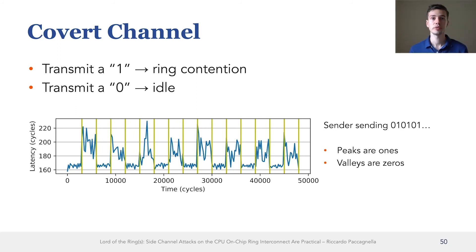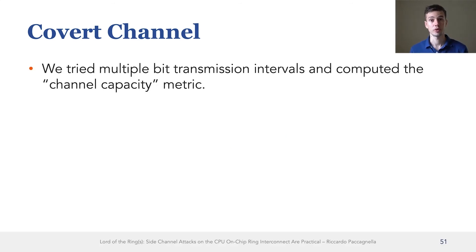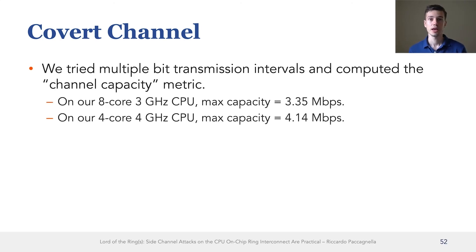To compare the performance of our covert channel with the one of prior work, we use the channel capacity metric, which takes into account both the bandwidth and the error rate. On both our CPUs, we were able to achieve channel capacities that exceed three megabits per second, making our attack the fastest to date for attacks that do not rely on shared memory.